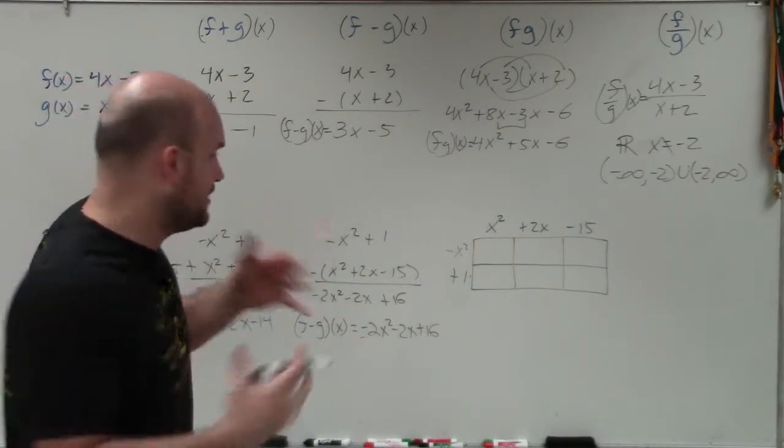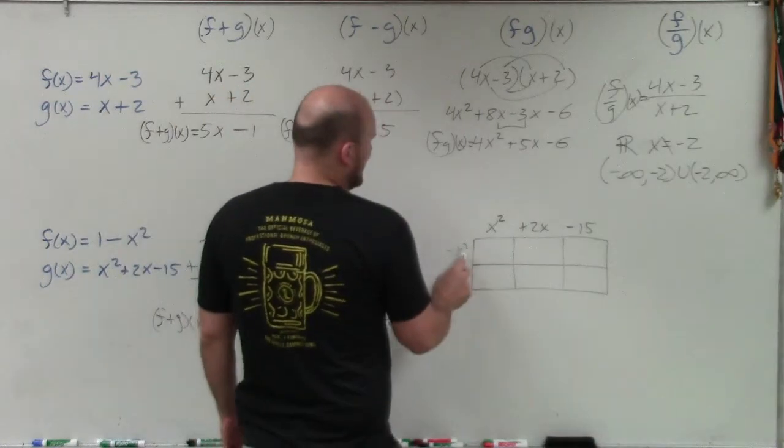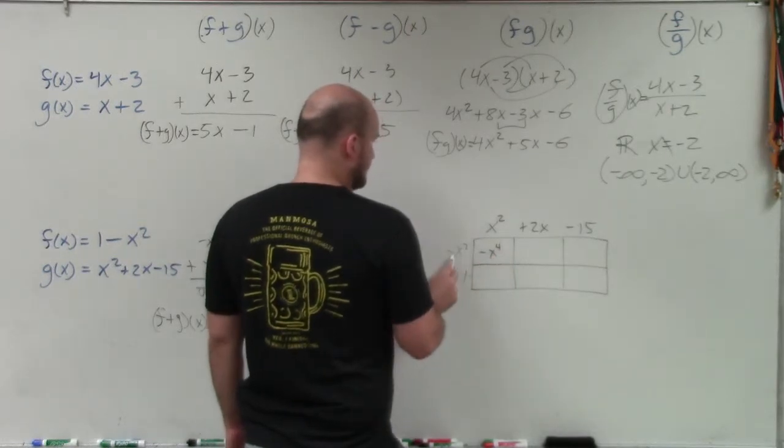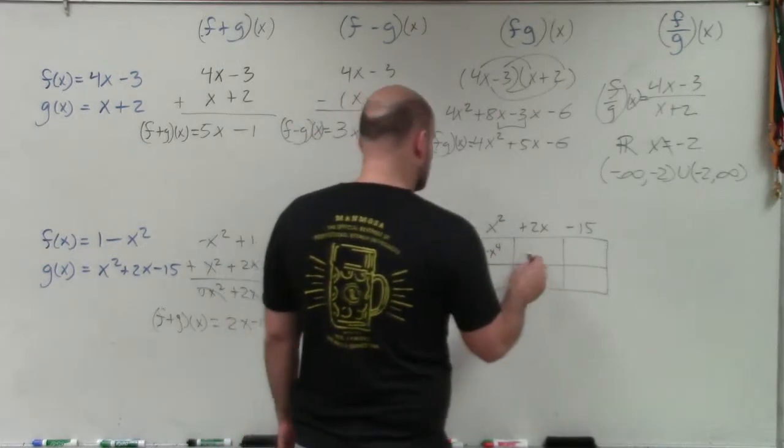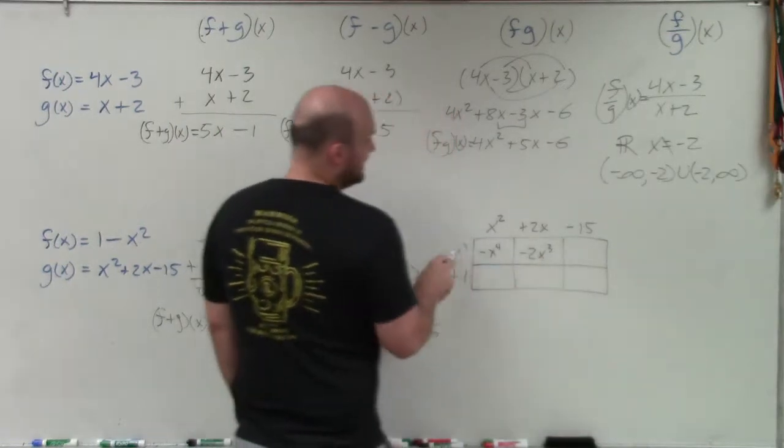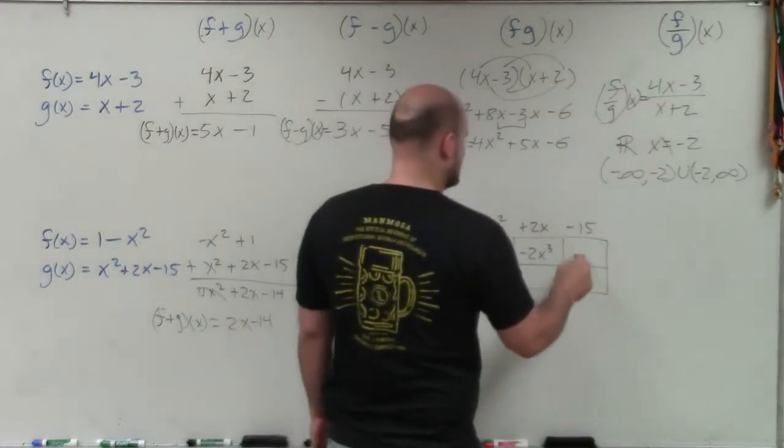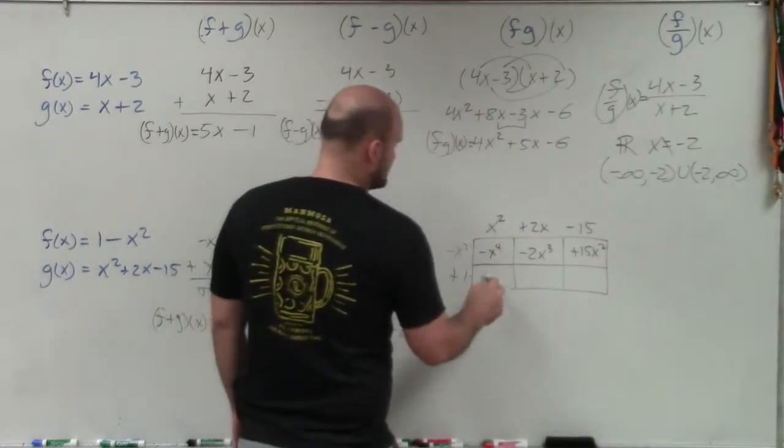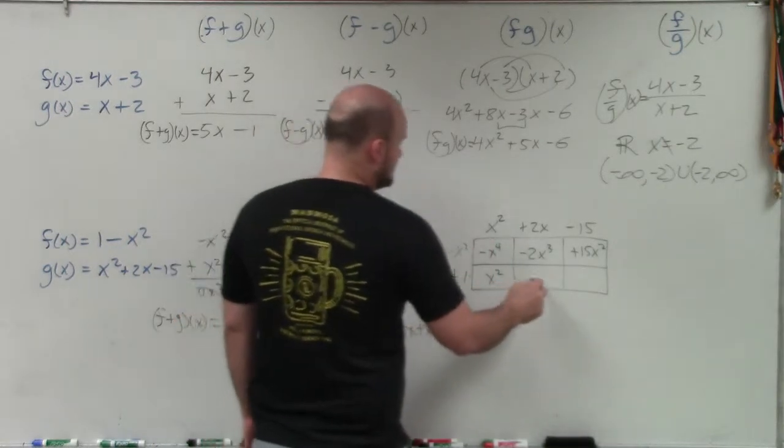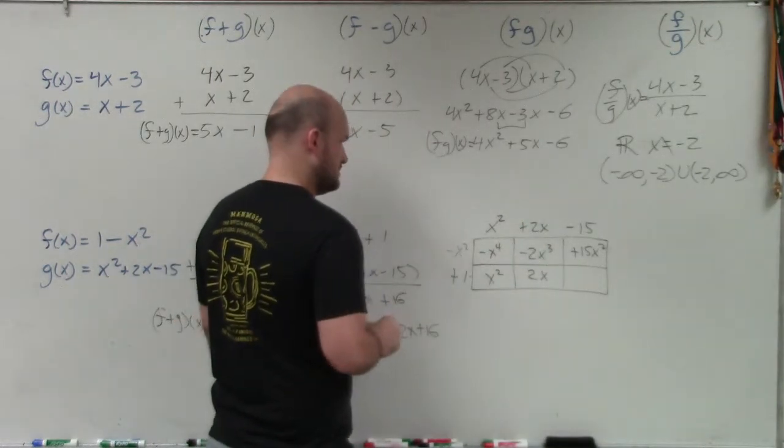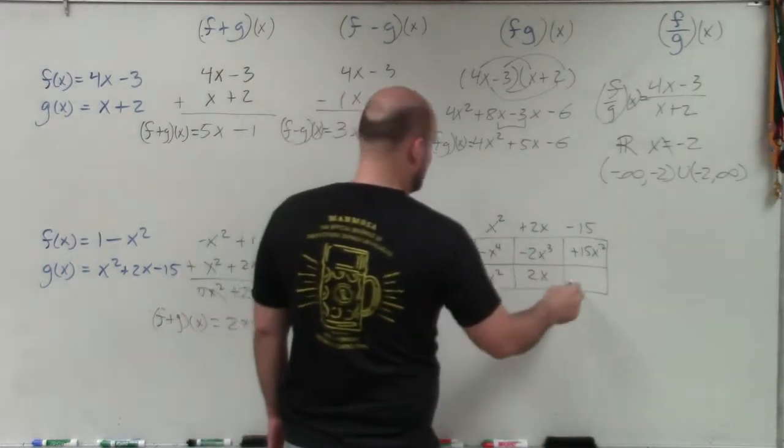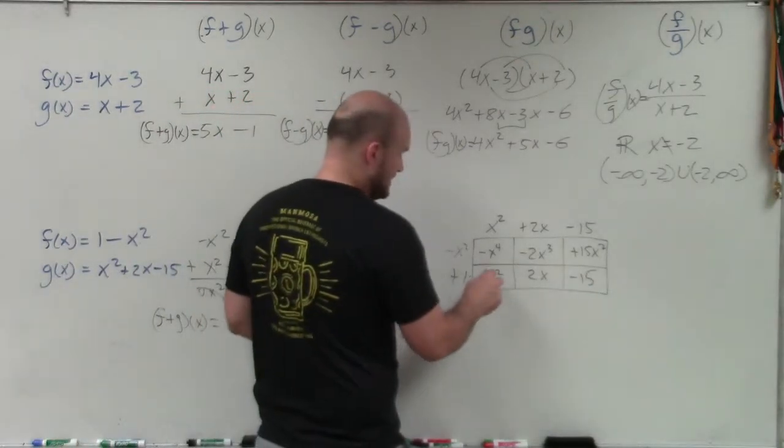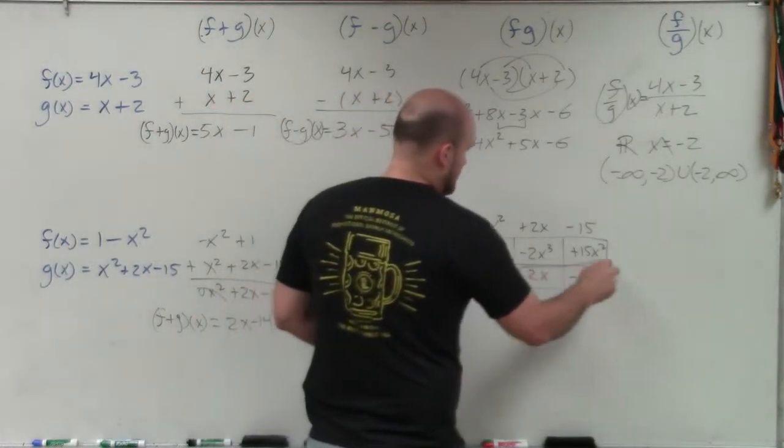So negative x squared times x squared is going to be now a negative x to the fourth. Negative x squared times 2x is going to be a negative 2x cubed. Negative x squared times negative 15 is going to be a positive 15x squared. x squared times 1 is just going to be x squared. 2x times 1 is just going to be a 2x. And 1 times negative 15 is just going to be a negative 15. And you can see there's actually only one set of common terms here.